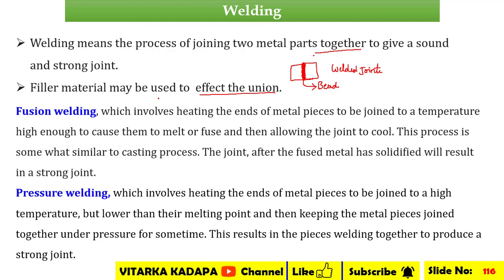The welding process consists of two types. The first is fusion welding. In fusion welding, it involves heating the ends of the metal pieces to be joined at a temperature close enough to cause them to melt, and then allowing them to cool and solidify. This process is very similar to the casting process — instead of pouring molten metal, we are creating a weld pool in the form of molten metal. The joint after the fusion metal has solidified results in a strong joint.